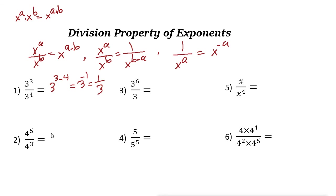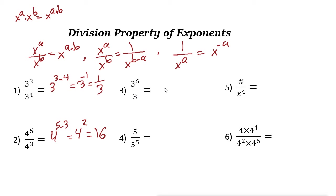Number two: 4 to the power of 5 over 4 to the power of 3, so the exponent is 5 minus 3 which is 2 — that's 4 squared, or 16. Number three: 3 to the power of 6 over 3 to the power of 1, so the answer is 3 to the power of 6 minus 1, which is 3 to the power of 5.